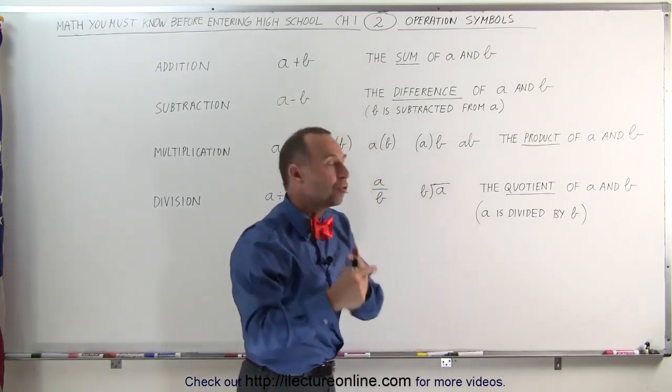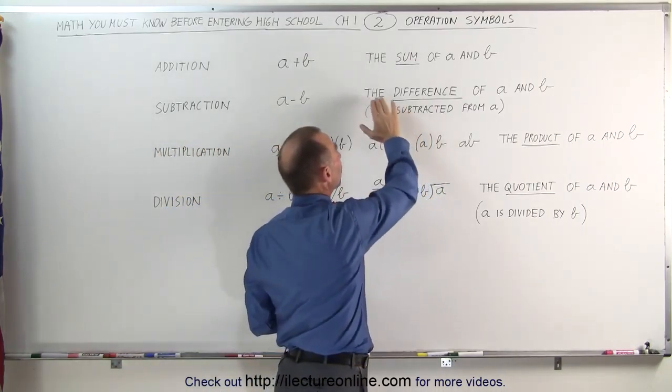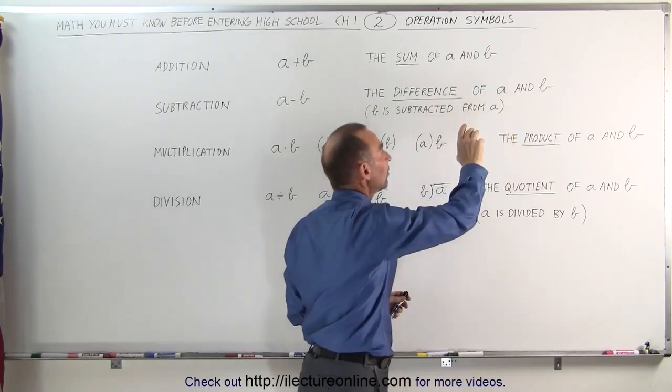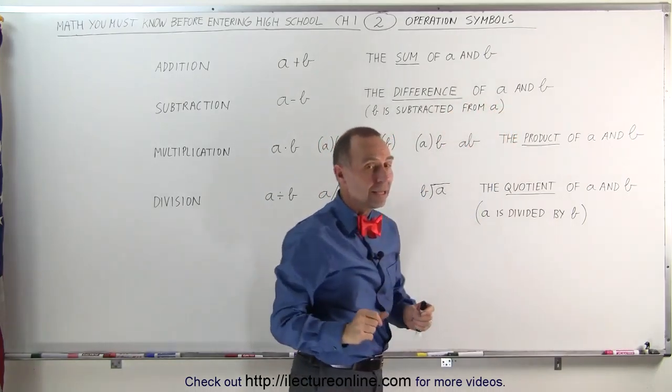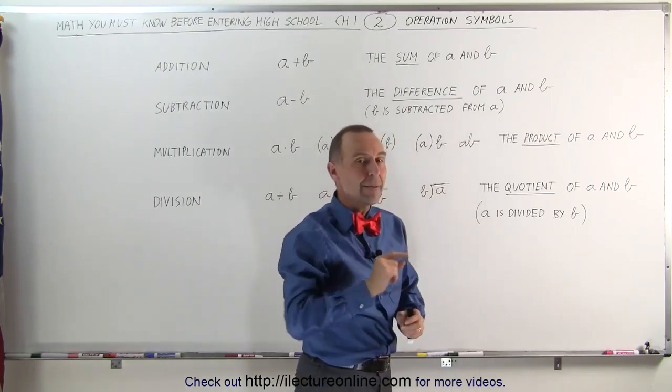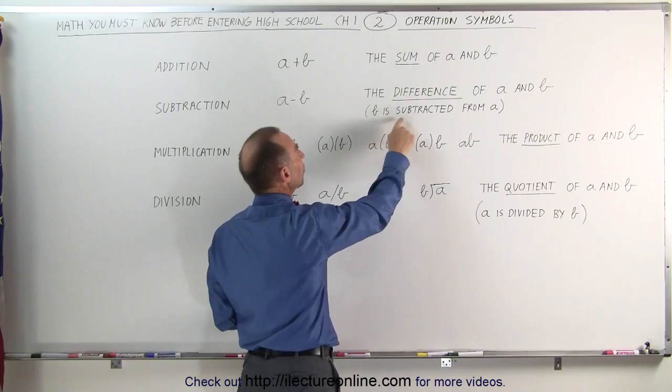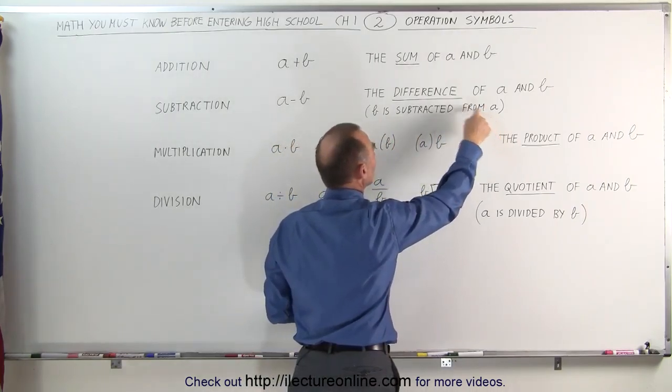Then you have to reverse the order, then it would be b minus a, so it's very important in how you say this. The difference of a and b means a minus b. If you say the difference of b and a, that means b minus a. Another way of saying this is that b is subtracted from a and the result is the difference.